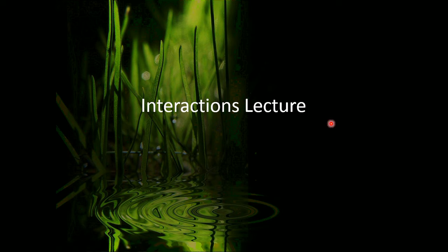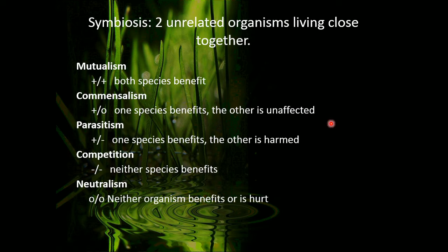This is a lecture on interactions between organisms. The first thing we're going to do is symbiosis, which is when two unrelated organisms live closely together for an extended period of time. Mutualism, commensalism, and parasitism are the three main types of symbiosis.